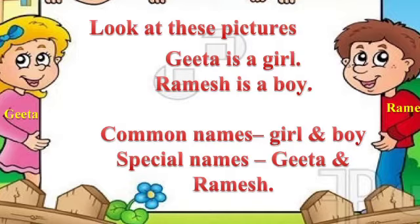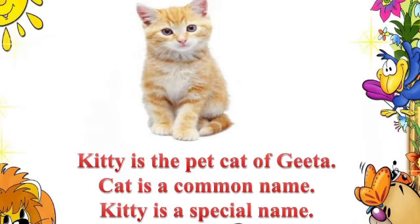Children, look at these pictures. Geeta is a girl. Ramesh is a boy. Here, common names are girl and boy. Special names are Geeta and Ramesh. Boy and girl are common names of these persons, but they also have special names. The boy's special name is Ramesh. The girl's special name is Geeta. Our pets also have special names. Cat is a common name. Kitty is the name of the cat, so Kitty is a special name. Kitty is the pet cat of Geeta.